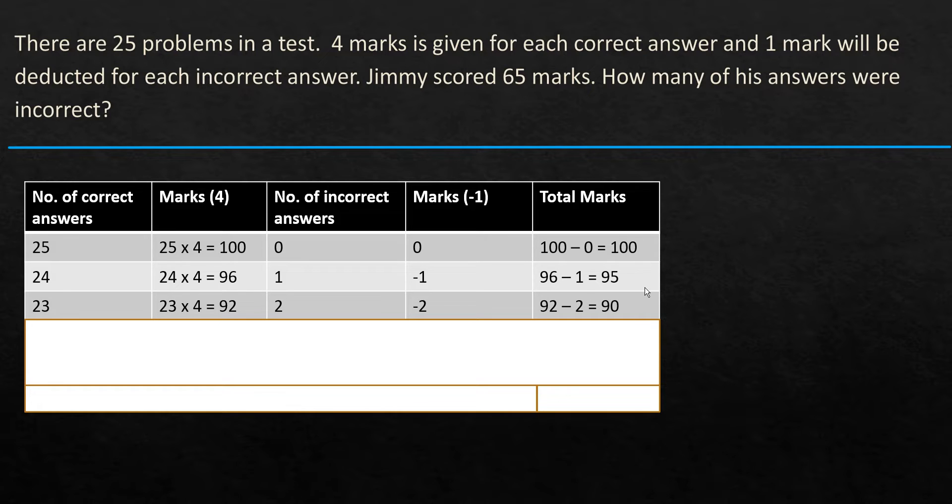So we can look at this and we see that there is a pattern that is coming up here, and what is it? Every time we reduce the number of correct answers and increase the number of incorrect answers, the total goes down by 5. So there is, between these two, there is a difference of 5. Again, between these two, there is again a difference of 5. So we are sure that it is going to keep on decreasing by 5.